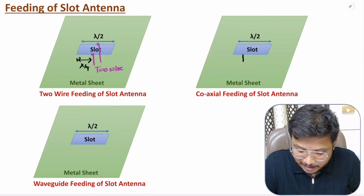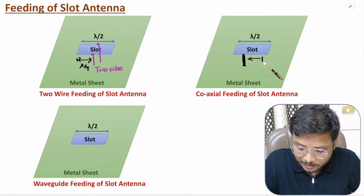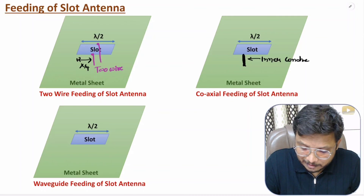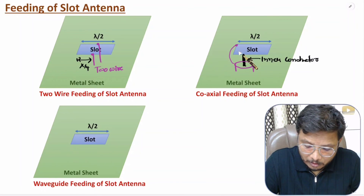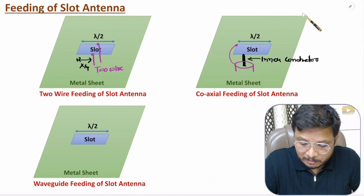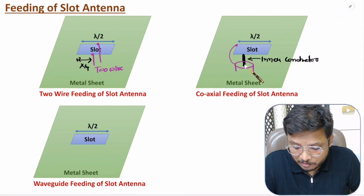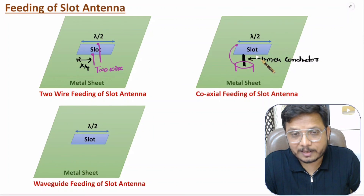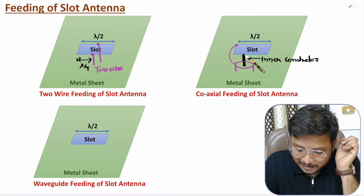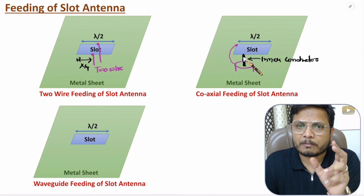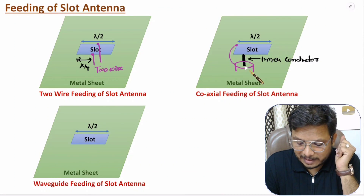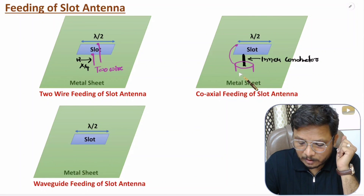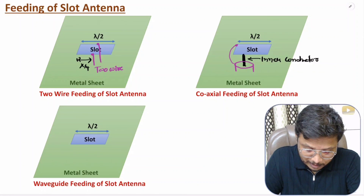The second feeding technique is coaxial feeding. In coaxial feeding, the inner conductor connects somewhere along the edge of the slot, and the outer conductor connects on the metal sheet. For proper impedance matching, the inner conductor must be located precisely on the edge. You need to tune its position using software like HFSS or CST to identify the exact location of the inner conductor.